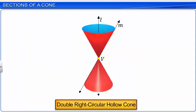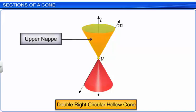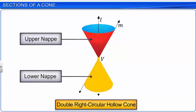The cone is divided into two parts by the vertex. The upper part is called the upper nappe and the lower one is called the lower nappe.